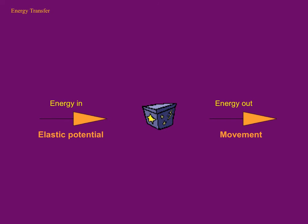Now we've got a jack-in-the-box — an old-fashioned toy. When the lid is pushed down, something like a clown or a rabbit on a spring is squashed inside. With the lid on and the toy squashed down, we have elastic energy stored in the spring. When the lid is opened, the toy bounces out, the spring relaxes, and it transfers this elastic energy into movement energy.